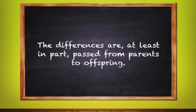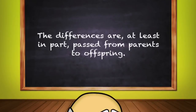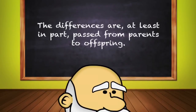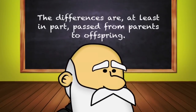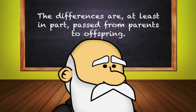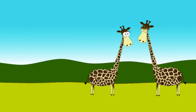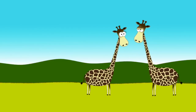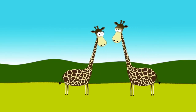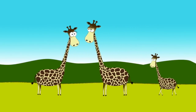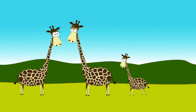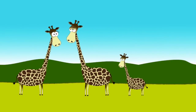Condition number two: the differences are, at least in part, passed from parents to offspring. Darwin's descent with modification is the idea that offspring are fairly similar to their parents with some genetic differences.